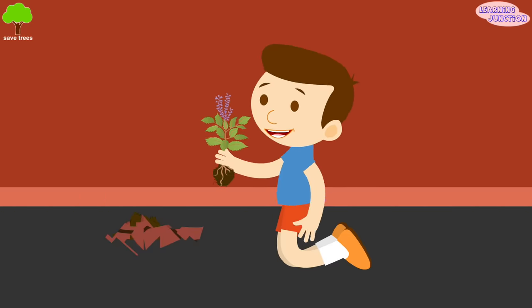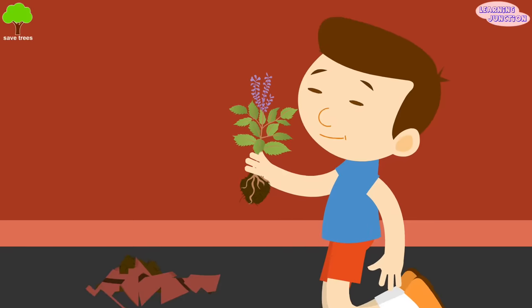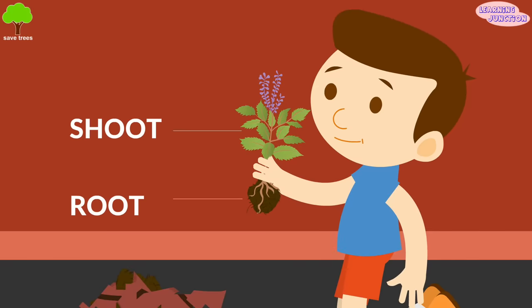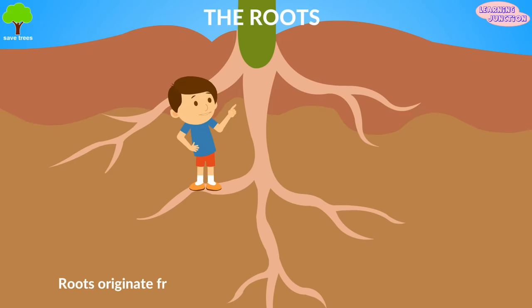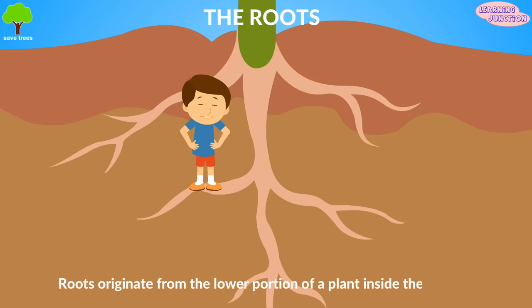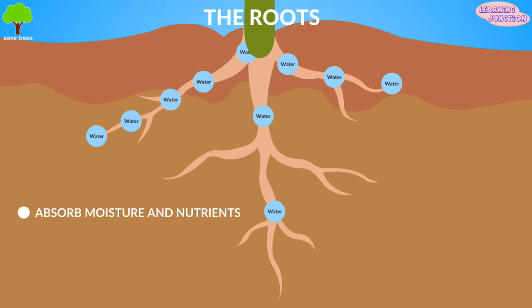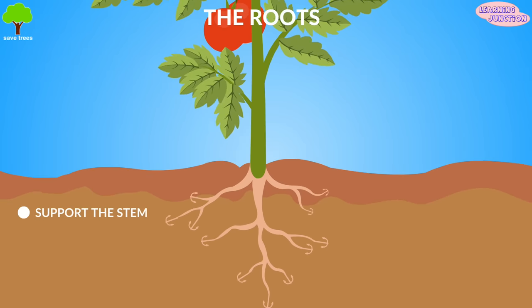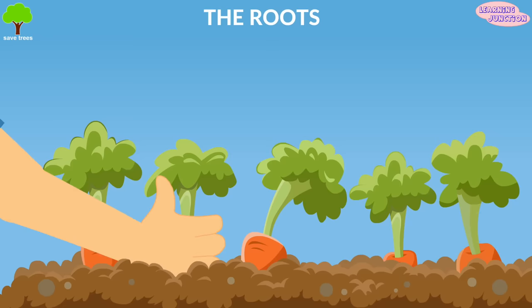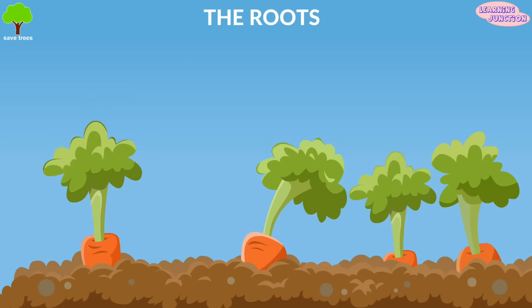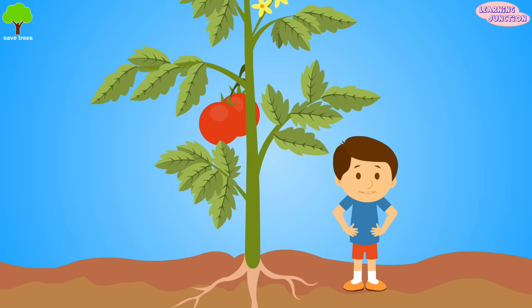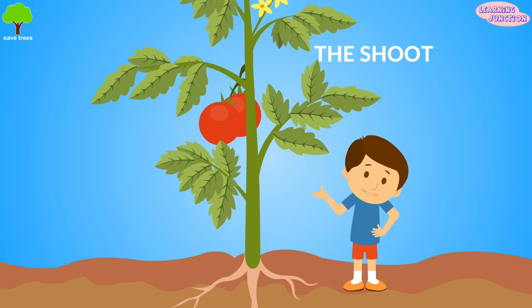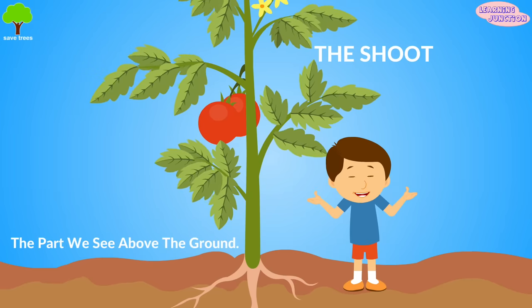The two important main parts of the plant are the root and the shoot. Roots originate from the lower portion of a plant inside the ground. Roots absorb moisture and nutrients, anchor the plant in the soil, support the stem, and store food, such as potatoes and carrots. Roots is the part of plant that we can see above the ground level.